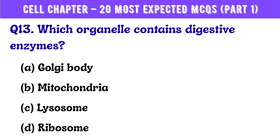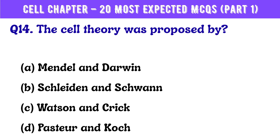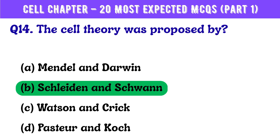Question number 13. Which organelle contains digestive enzymes? Correct answer is option C: Lysosome. Question number 14. The cell theory was proposed by? Correct answer is option B: Schleiden and Schwann.